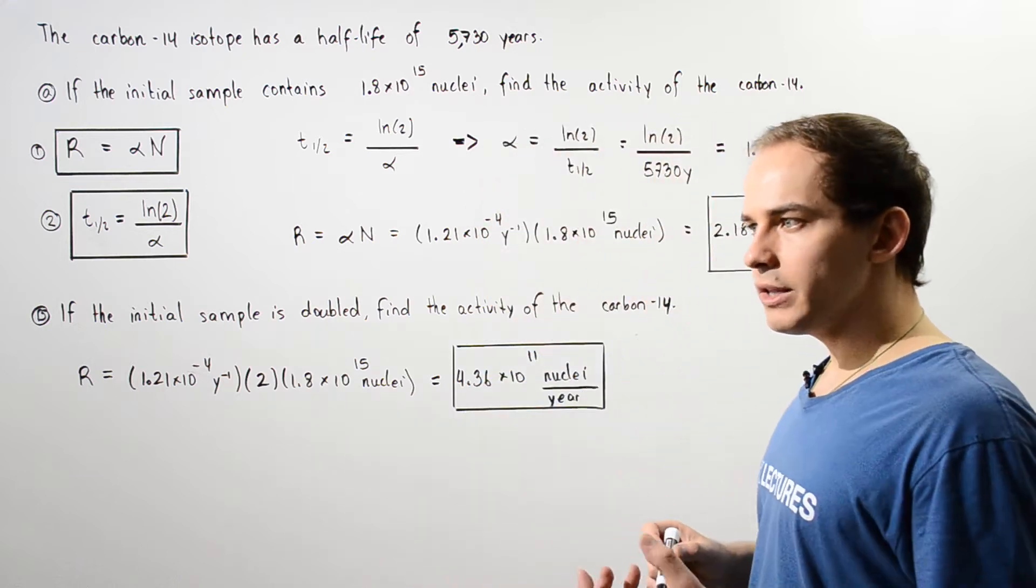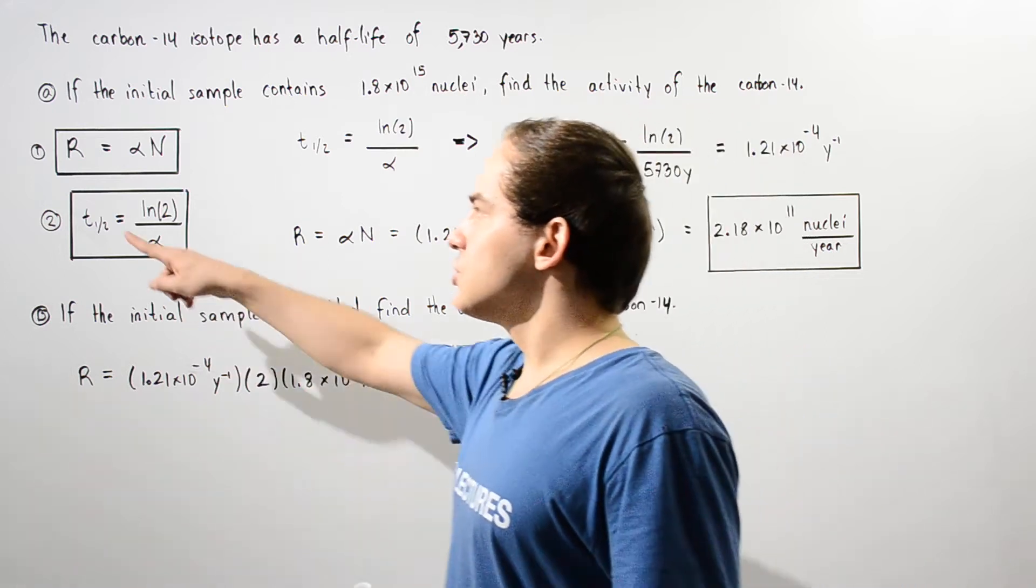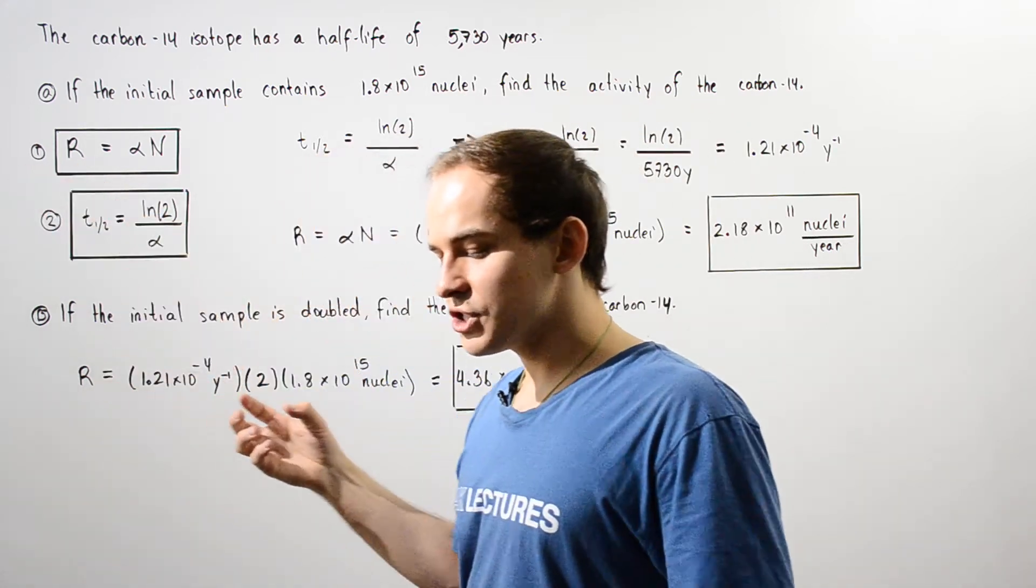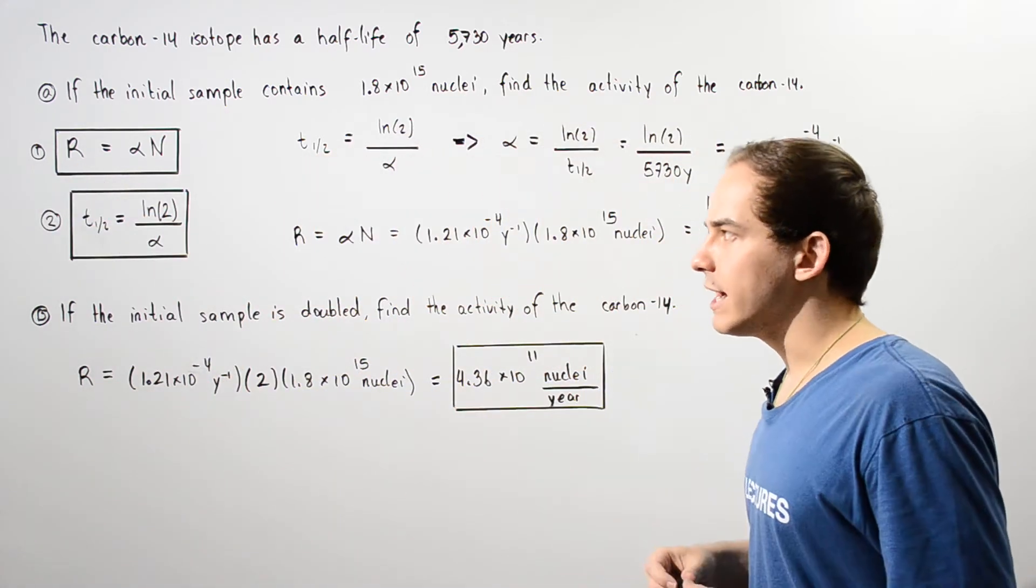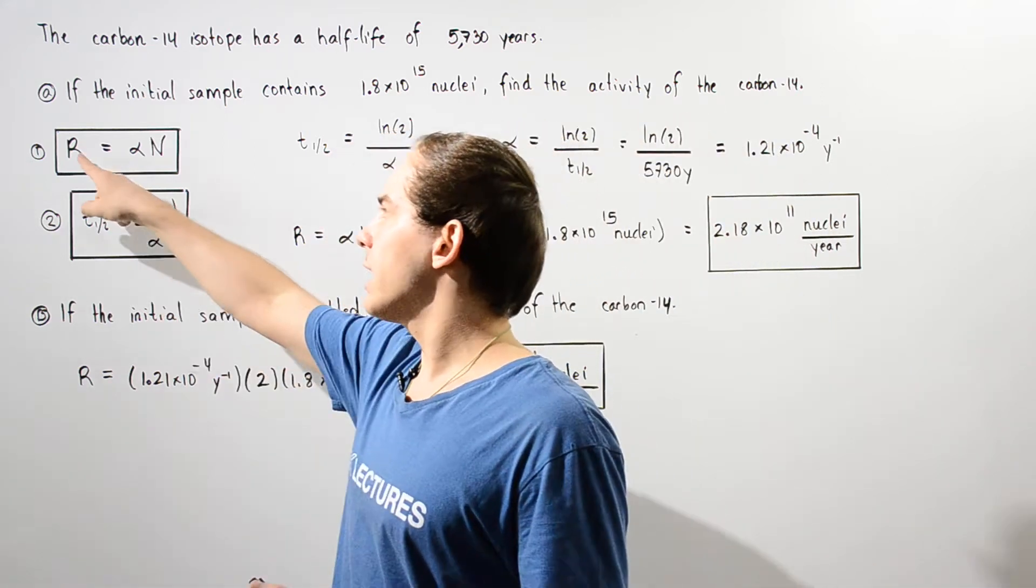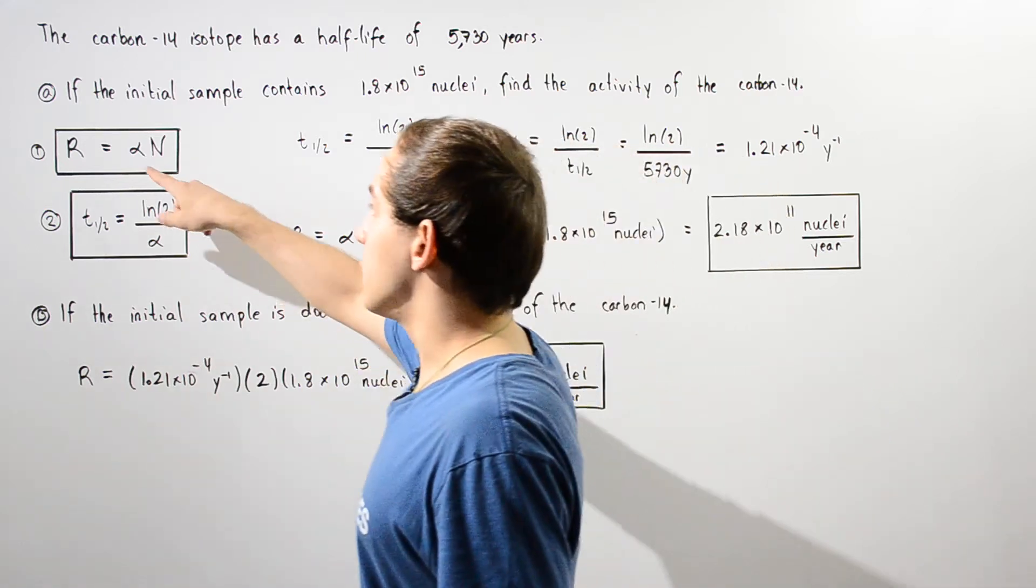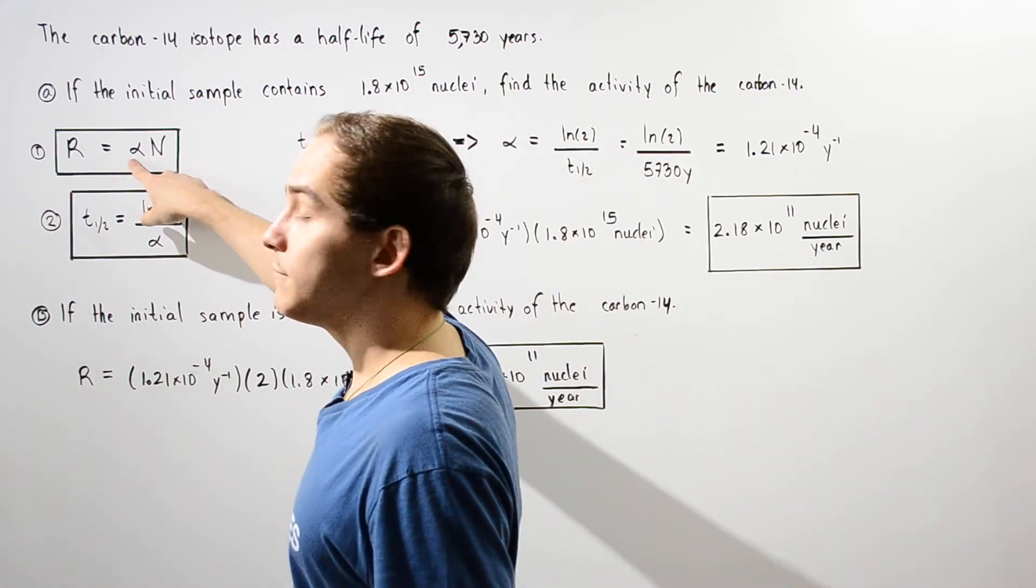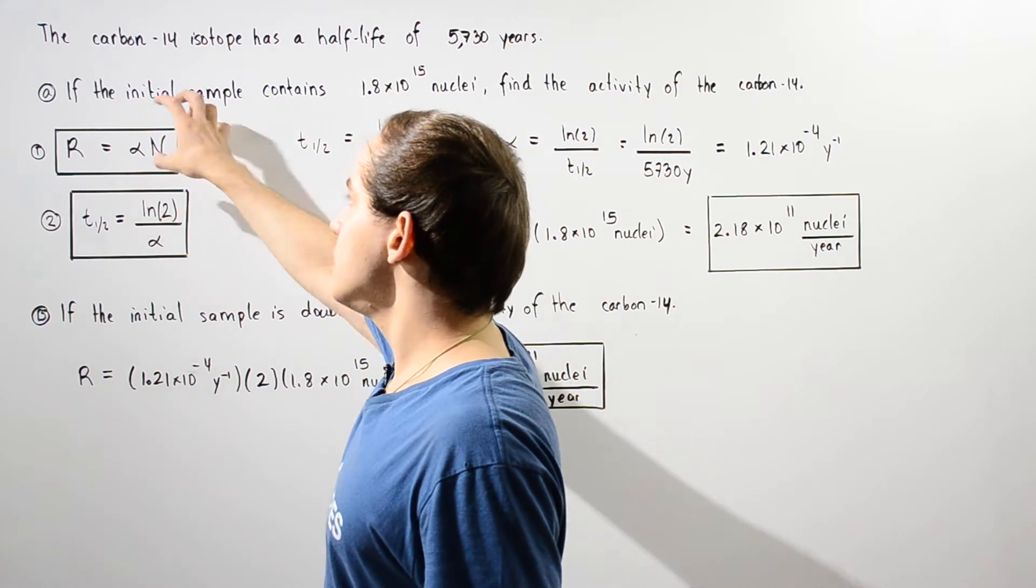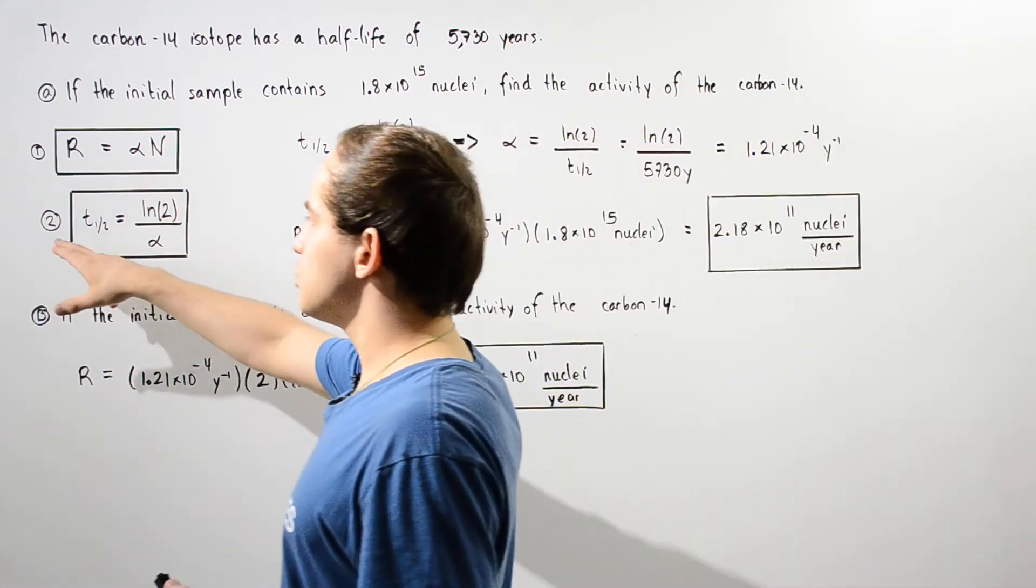Let's begin with Part A by recalling the two equations we'll need. Equation one gives us the activity of our isotope: the activity R equals the product of the decay constant alpha and N, the number of nuclei in our sample.